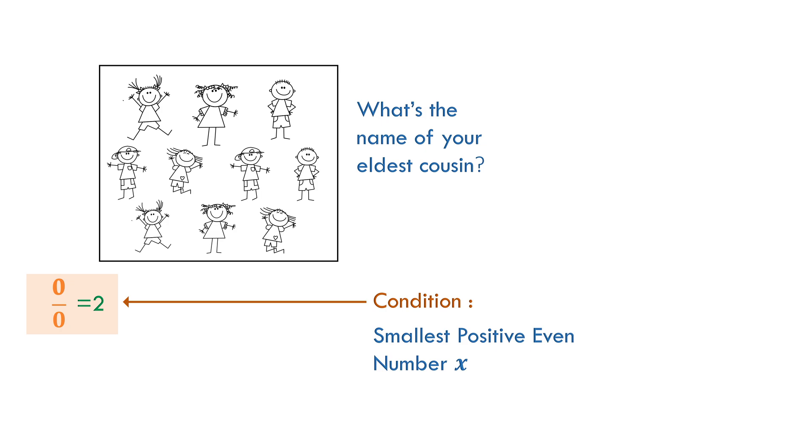This tells us that 0 by 0 can actually be 2. But, an answer which doesn't exist cannot be 2. This explains how indeterminate and doesn't exist are two different things.